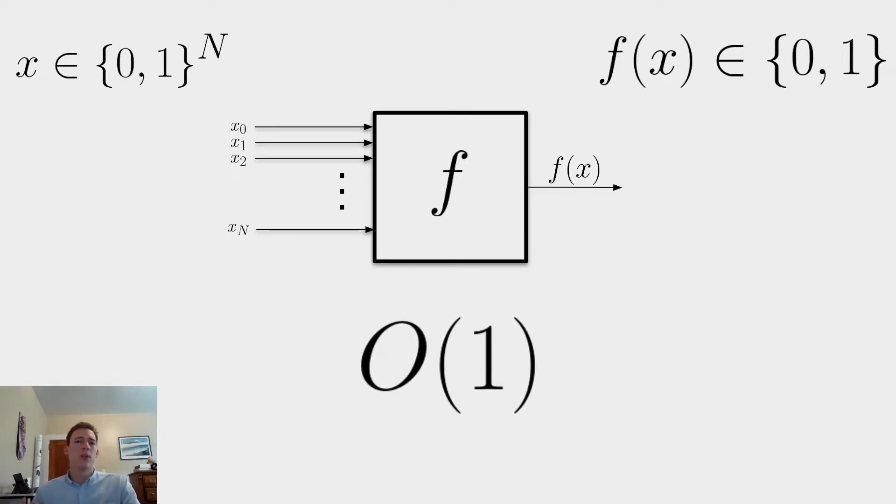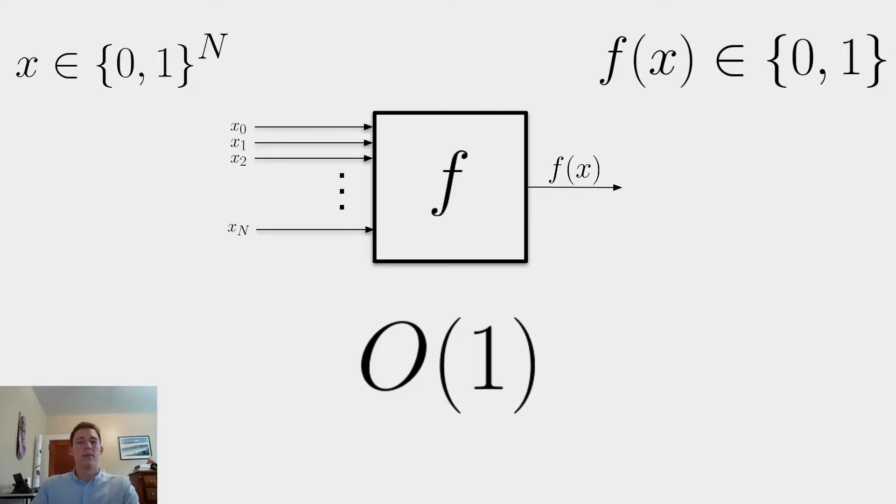For now, I want to consider the one bit case in order to simplify the explanation of Deutsch's algorithm. So now we're dealing with the function f which takes an argument a single bit and is going to return a single bit. We're still just concerned with whether this f is constant or balanced. So now let's consider what kind of f's can there be. There's actually only four possible functions that f could be.